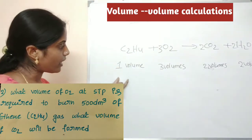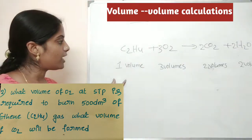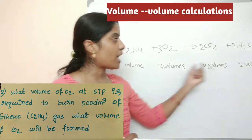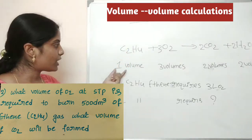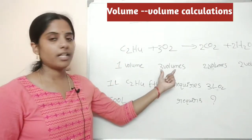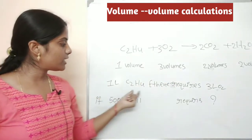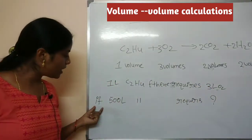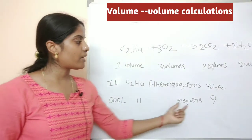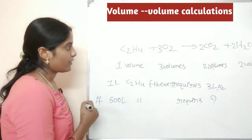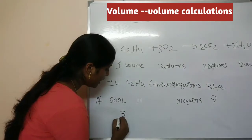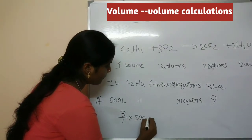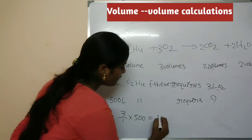Now the question: we have 500 liters of ethyne — what volume of oxygen is required? From the balanced equation, 1 liter of ethyne requires 3 liters of oxygen. So for 500 liters of ethyne: 3 divided by 1 × 500 = 1500 liters of oxygen is required.